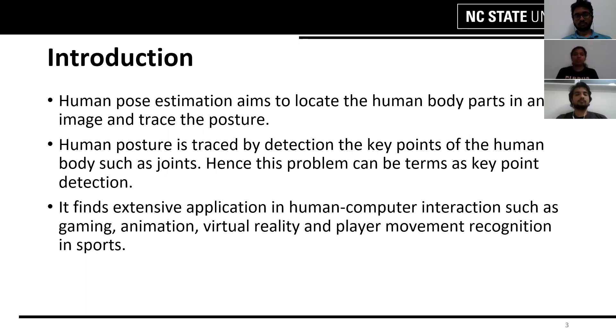Human pose estimation aims to locate the human body parts in an image and trace its posture. The human posture is traced by detecting the key points of the human body. Here, the key points for the human body are the joints. Joints mainly form corner points in the human body, hence we can formulate this as a classic corner detection problem.